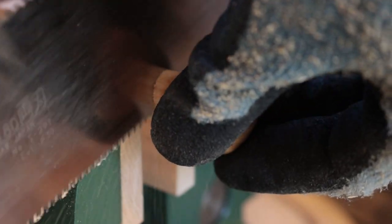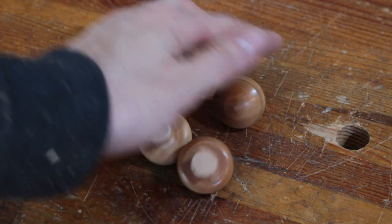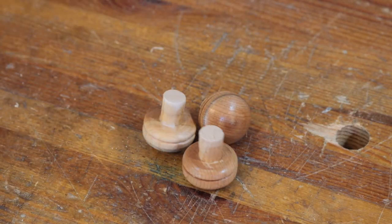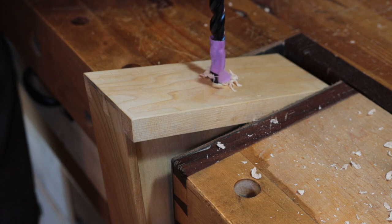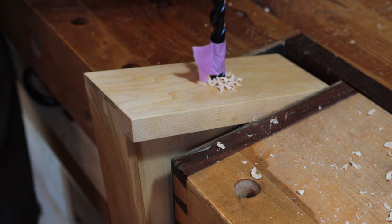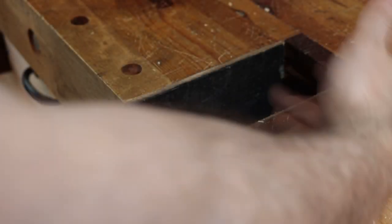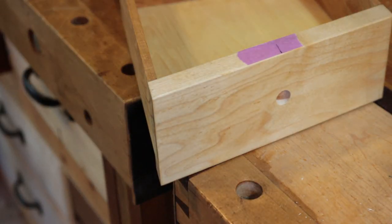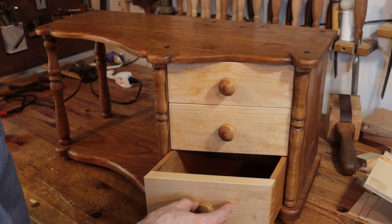I then cut the knobs to size and then proceeded to drill holes in the front of the drawers for the knobs. This was really the only tricky part of the whole process because the drawer fronts are on an angle. I drew a line down the front of the drawers that I could index when drilling these holes to make sure that they were perpendicular to the rest of the carcass.